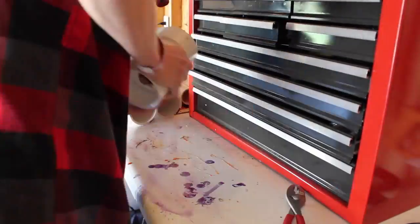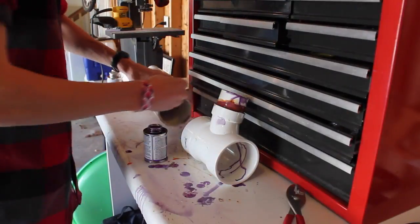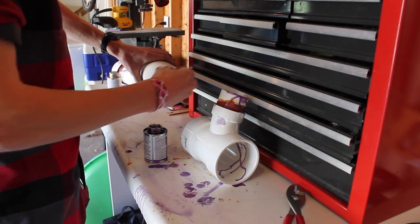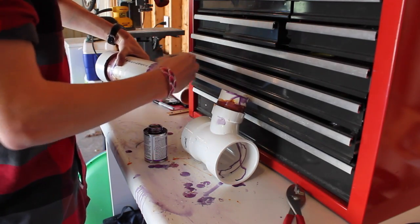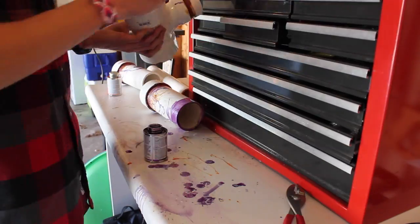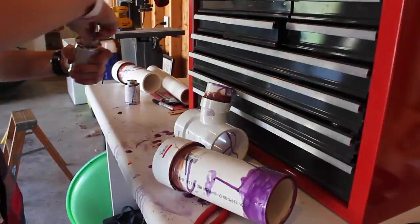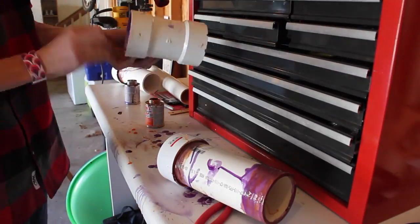Here we're priming and cementing the reducing bushing to the 2 inch piece of PVC. Then we move on to priming and cementing the 3 inch diameter reservoir to the 3 inch ends of the tee.